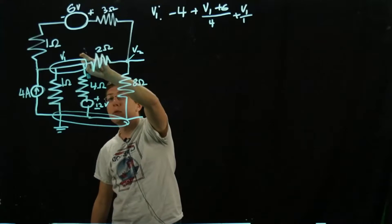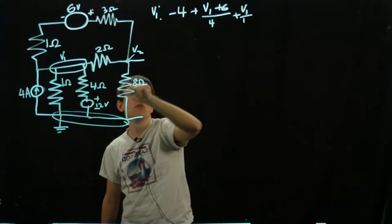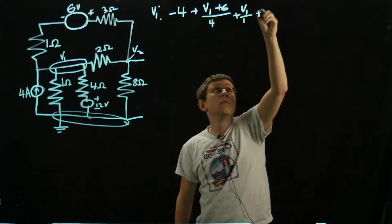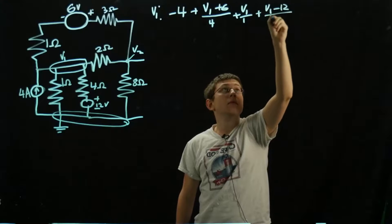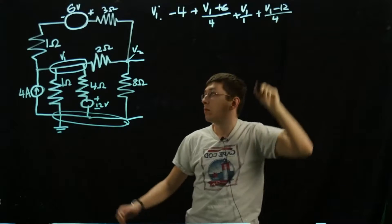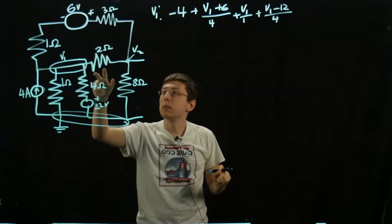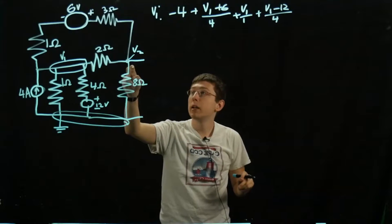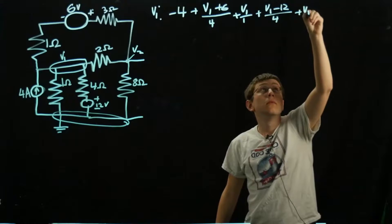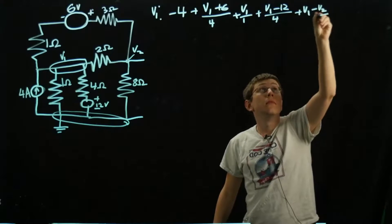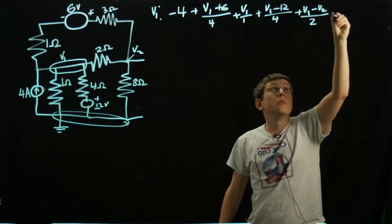Here we have (V1 - 12) over 4, and lastly (V1 - V2) over 2. That all equals 0.